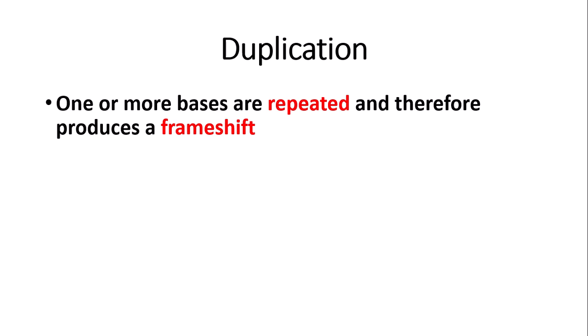The next type of mutation is duplication. As the name suggests, duplication is when one or more bases are repeated, and therefore produces a frame shift. Duplication has the same effect as insertion, as the base is essentially being inserted or repeated. With duplications the same bases repeat — so if you have an adenine nucleotide, duplication will cause another adenine nucleotide to be inserted — so it basically has the same effect as an insertion.